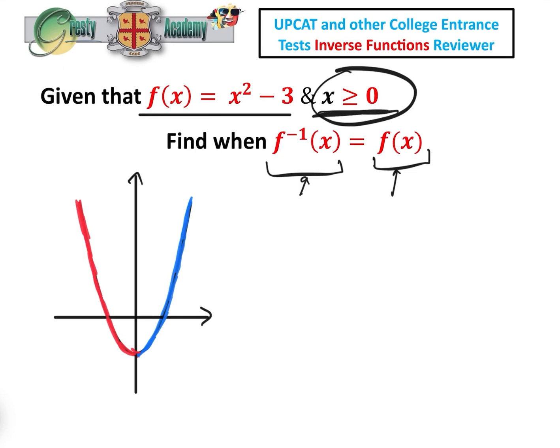Now, why is the restriction on the domain x greater than or equal to 0? Well, here is the chart of f(x) equals x squared minus 3, and you can see that if we don't have the restriction on the domain, i.e. only the blue part of the curve,